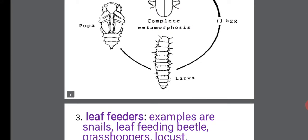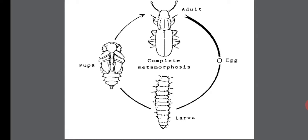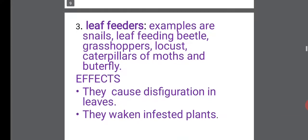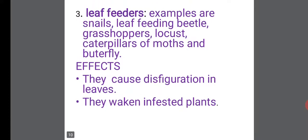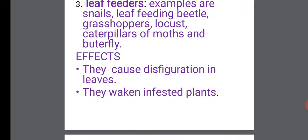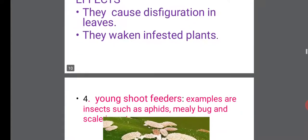That is complete metamorphosis. Hope we can remember the differences between complete and incomplete metamorphosis. The third one is the leaf feeders. Examples are snails, leaf-feeding beetles, grasshoppers, locusts, and caterpillars of moths and butterflies. These leaf feeders usually cause disfiguration — they feed on vegetables. Most of the time you may have noticed pumpkin leaves or water leaves at the market having holes; this is caused mainly by leaf feeders. They also weaken the infested plants.